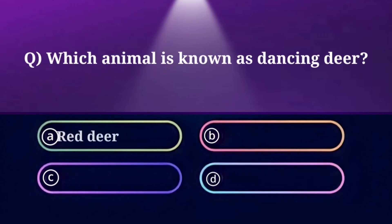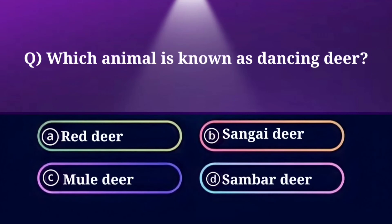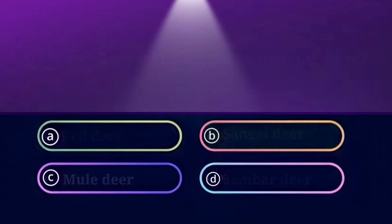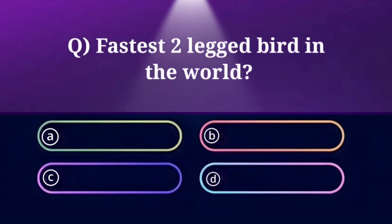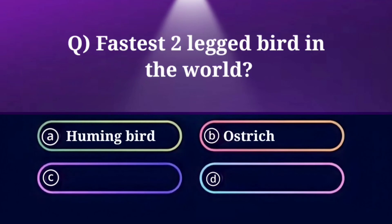Which animal is known as the 'Dancing Deer'? Option A: Red Deer, B: Sangai Deer, C: Mule Deer, D: Sambha Deer. And the answer is Sangai Deer. Fastest two-legged bird in the world. Option A: Hummingbird, B: Ostrich, C: Kiwi, D: Sparrow. And the answer is Ostrich.